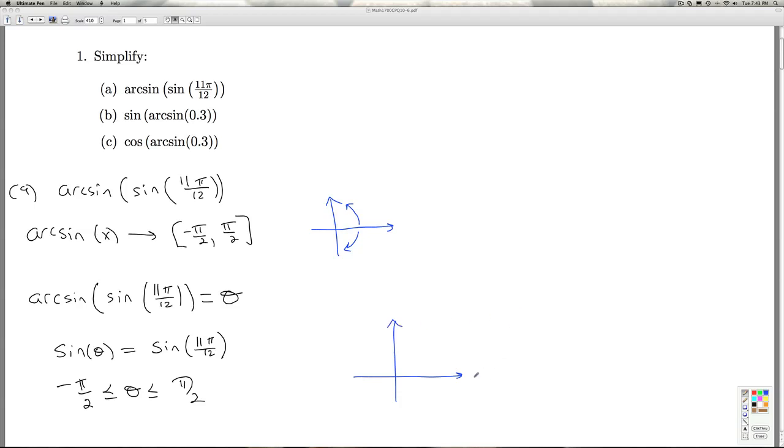as I go around the circle, that's 0. This is π over 2, which is 6π over 12. This is π, which is 12π over 12.